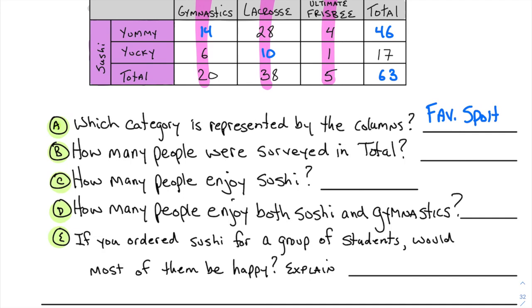How many people were surveyed in total? Remember that number? 63. So 63 people were surveyed in total.